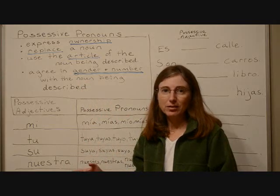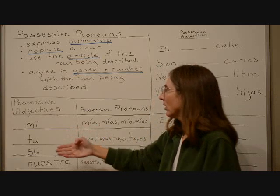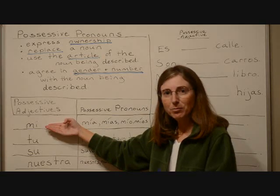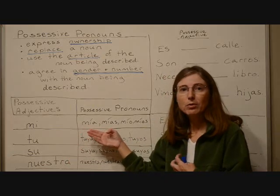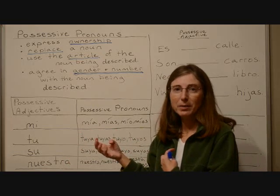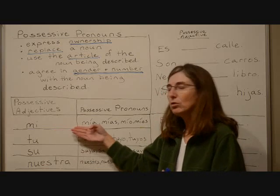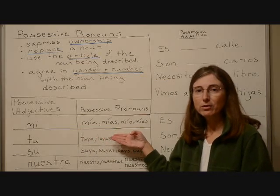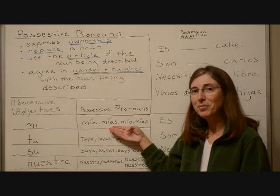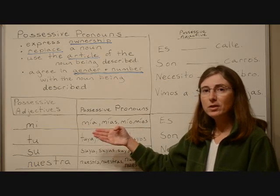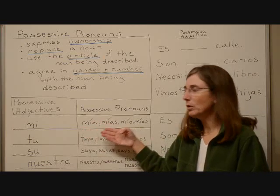If we know the possessive adjectives, it's really easy to compare possessive adjectives to possessive pronouns. For the possessive adjective 'my,' like 'my house,' we could use the possessive pronoun 'mine.' It's my house — it's mine. In Spanish, we would need to choose one of these four pronouns to stand for 'mine': mía, mías, mío, or míos, because the pronoun has to agree in gender and number with the noun we're replacing.